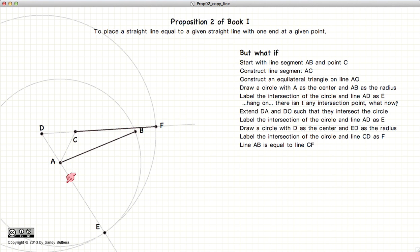So consequently, these two lines are also equal. But AB and AE are the radius of the same circle, so they're equal. So this line equals this line equals that line. They're all equal. And so we have successfully drawn a line starting at point C that is equal in length to AB.